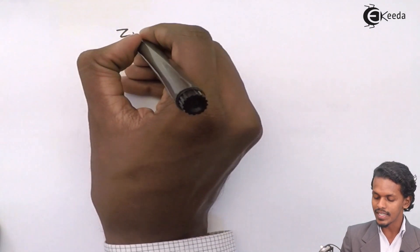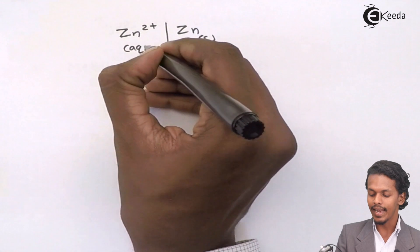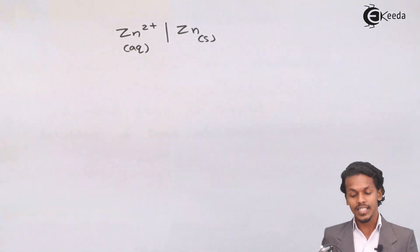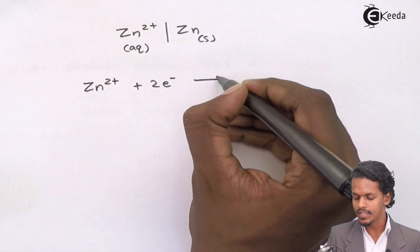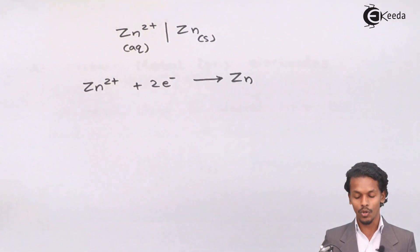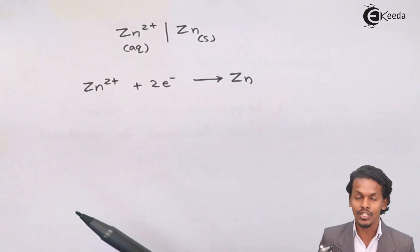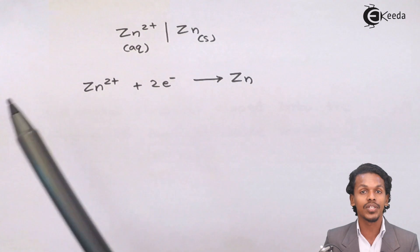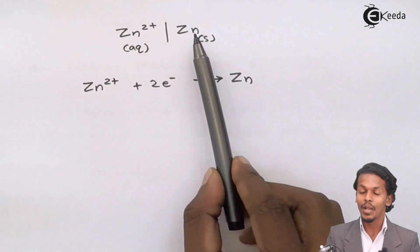For example, if I represent Zn²⁺ with a vertical line and Zn, Zn is the solid and Zn²⁺ is present in aqueous state. The half-cell reaction for a reduction process would be: Zn²⁺ + 2e⁻ → Zn. Here, zinc acting as the electrode is dipped in a solution of ZnSO₄ or ZnCl₂, which contains its own ions Zn²⁺. This is an example of a metal-metal ion electrode.